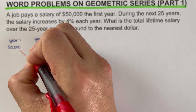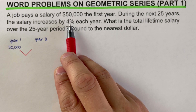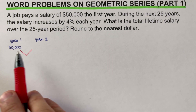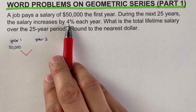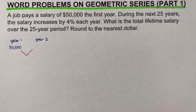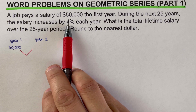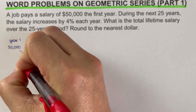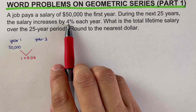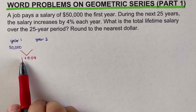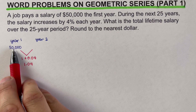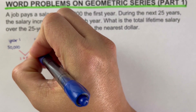On year two, the salary increases by 4%. Converting 4% to decimal gives 0.04. Multiplying $50,000 by 0.04 gives the increase, but we need the increase plus the original $50,000. So the multiplier is 1 + 0.04 = 1.04. Multiplying $50,000 by 1.04, the year two salary comes out to $52,000.